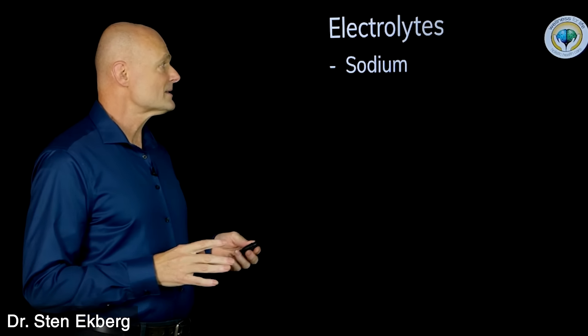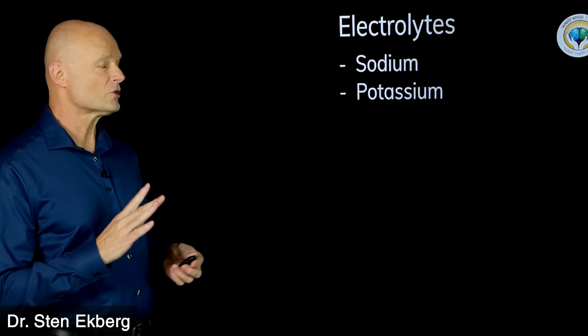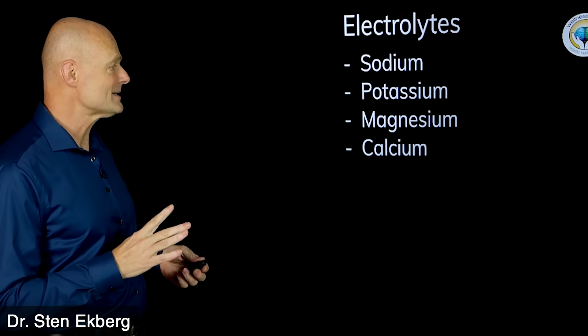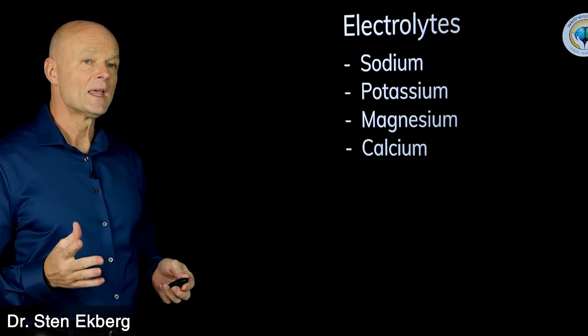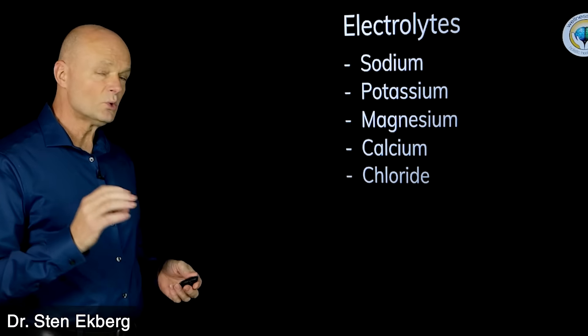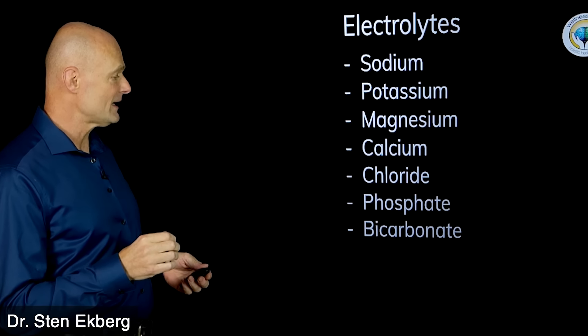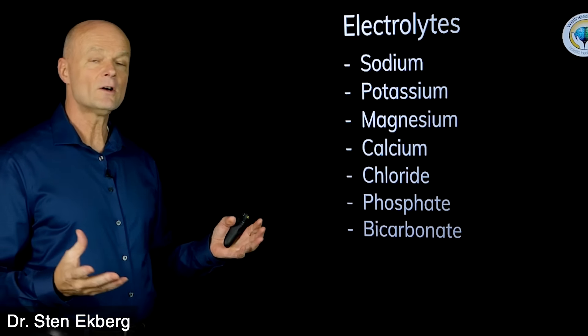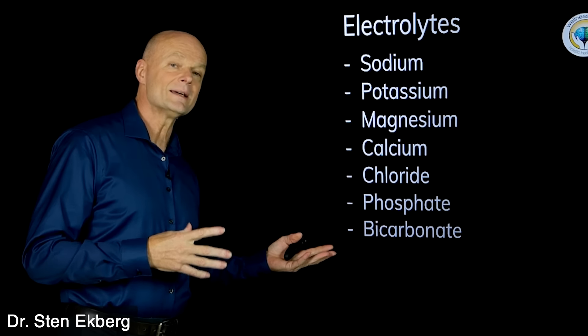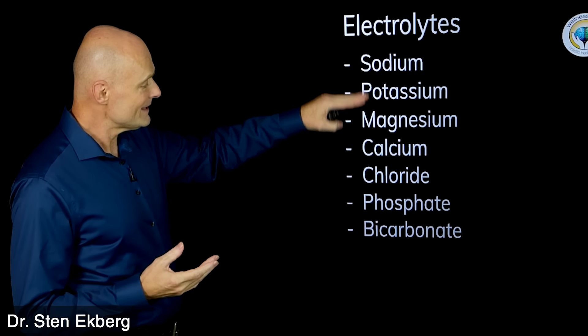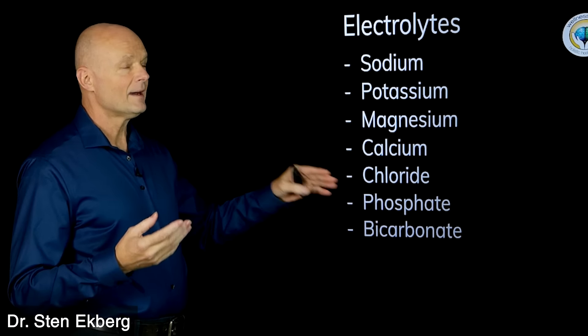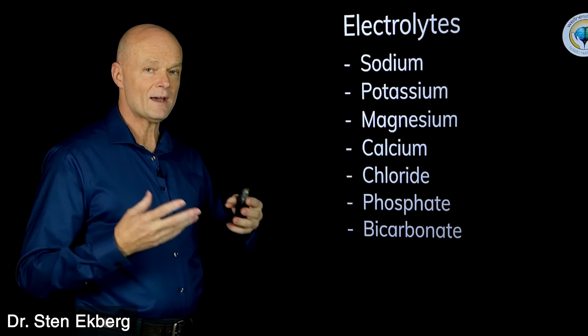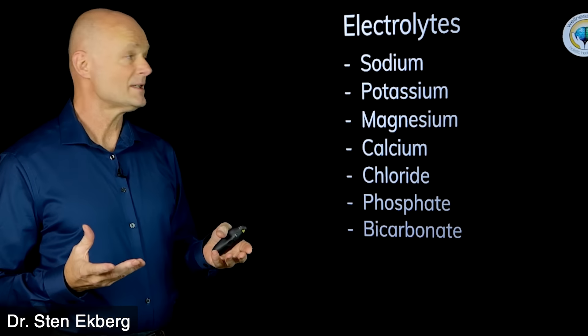First of all, electrolytes: the four main ones are sodium, potassium, magnesium, and calcium. And then there is also chloride, phosphate, and bicarbonate. There are others as well, but these are the main ones that we measure on blood tests, the main ones that we have in very large quantities.